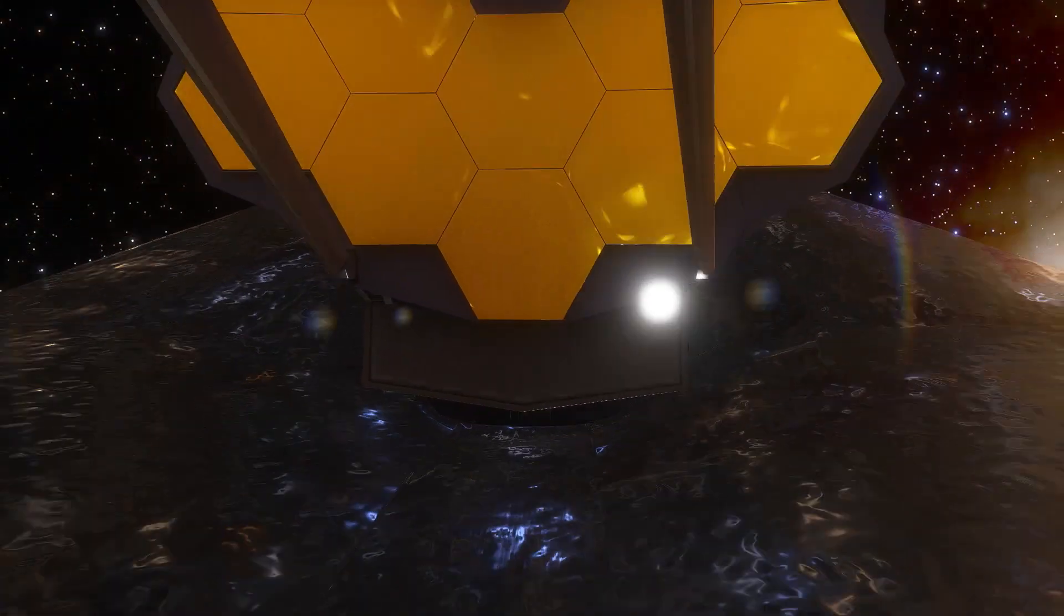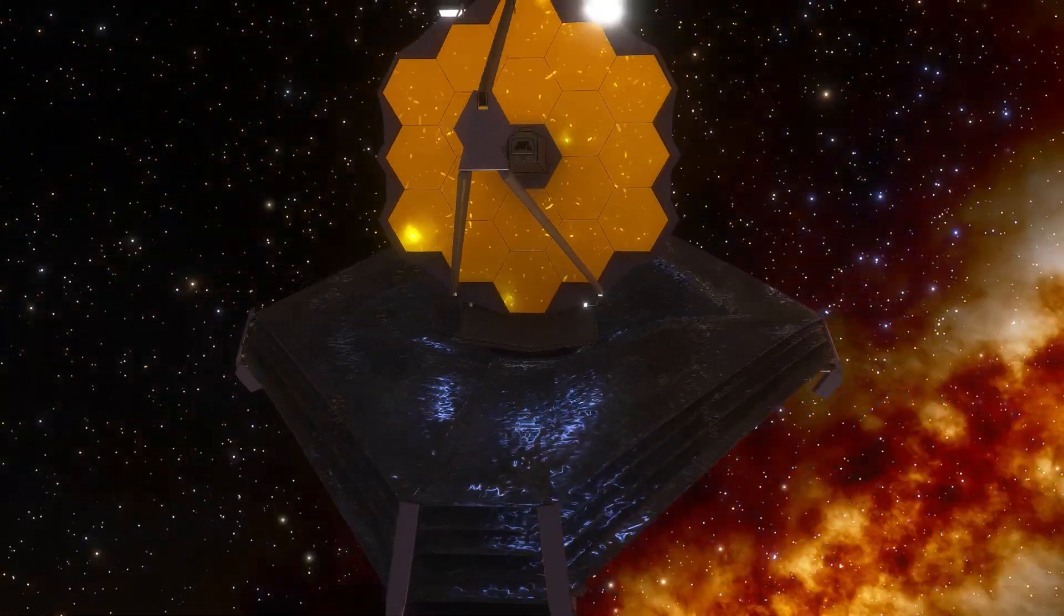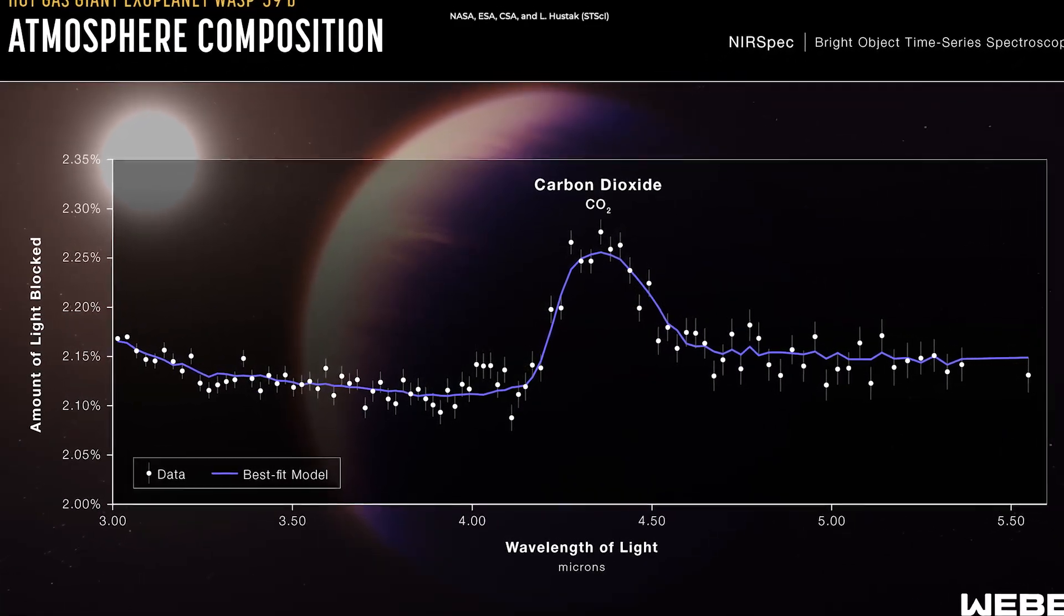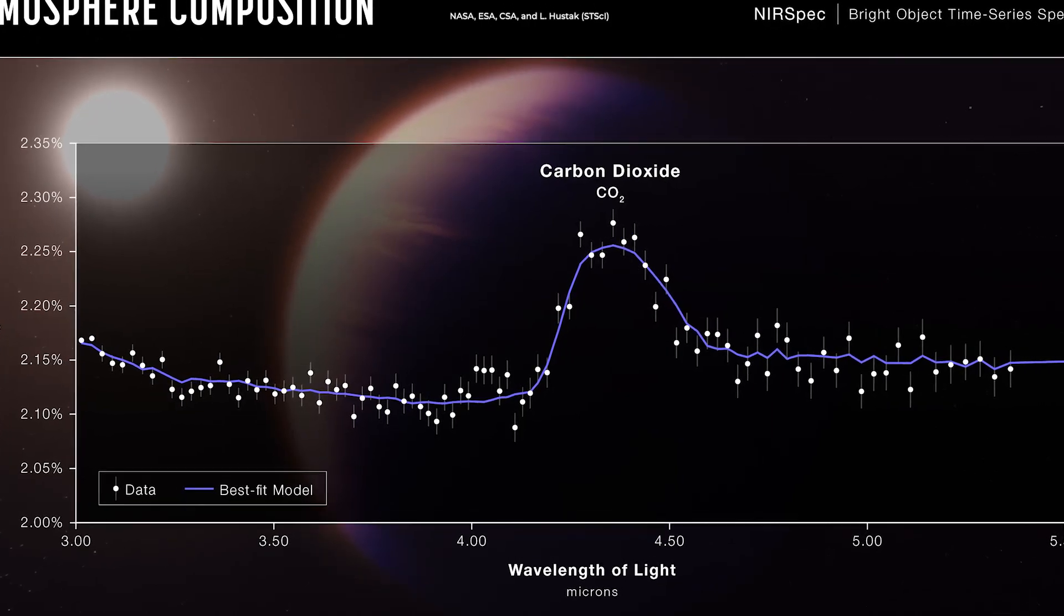NASA's Webb telescope keeps surprising us like no other telescope before. The latest discovery is the first clear detection ever of carbon dioxide in the atmosphere of an exoplanet.